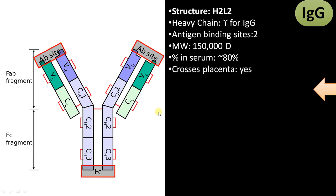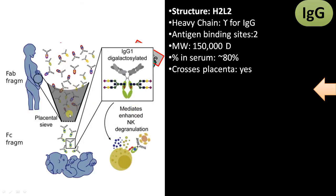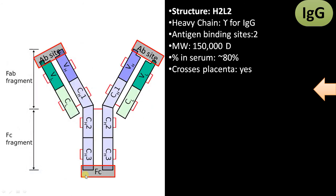It can cross placenta. IgG can pass through the placental barrier and is primarily involved in providing protection for the fetus and infants. It is the only immunoglobulin that can cross placenta.